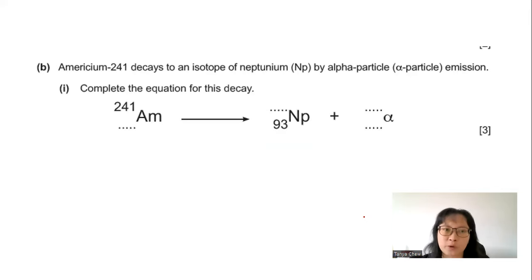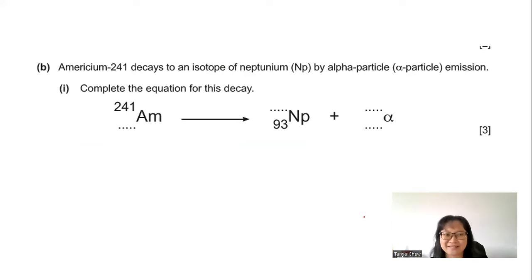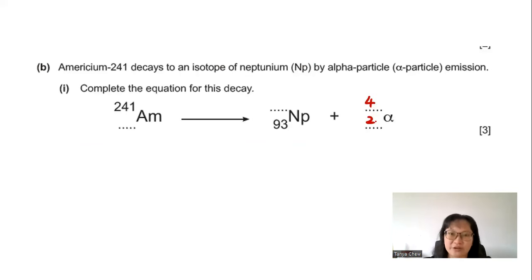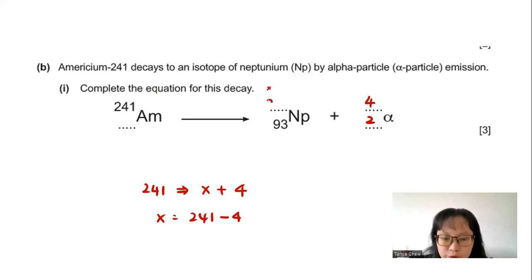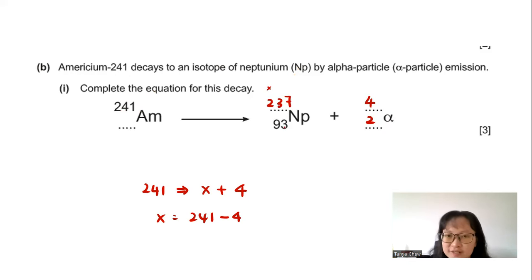Part B: Americium-241 decays to an isotope of neptunium by alpha particle emission. Complete the decay equation. Alpha particles are helium nuclei with mass number 4 and charge 2. So the mass number of neptunium = 241 − 4 = 237. The proton number of neptunium = 95 − 2 = 93.